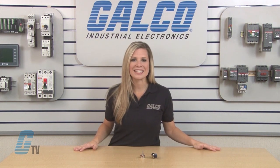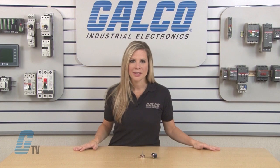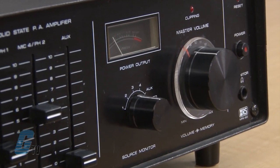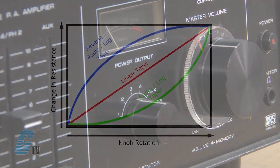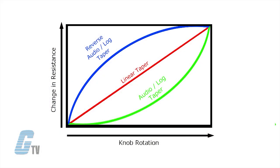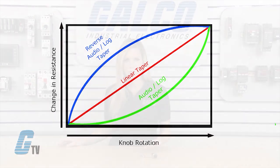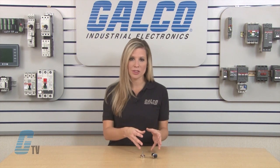The other type of potentiometer is a logarithmic taper. This is not often found in industrial applications and more so in audio equipment with volume control. Instead of having a linear change with the knob directly changing the resistance, there is more of a curved change. This change is designed for how humans perceive audio volume, which is logarithmic and not linear.